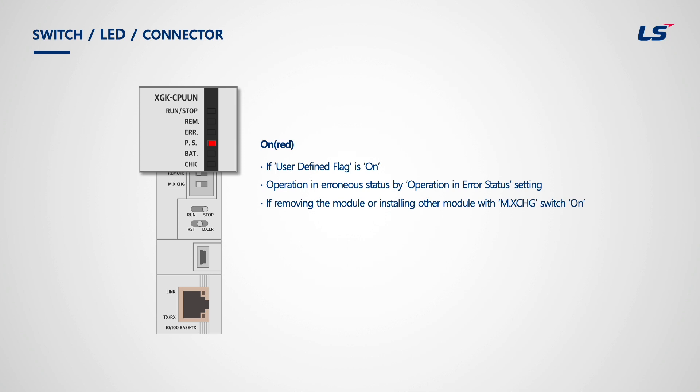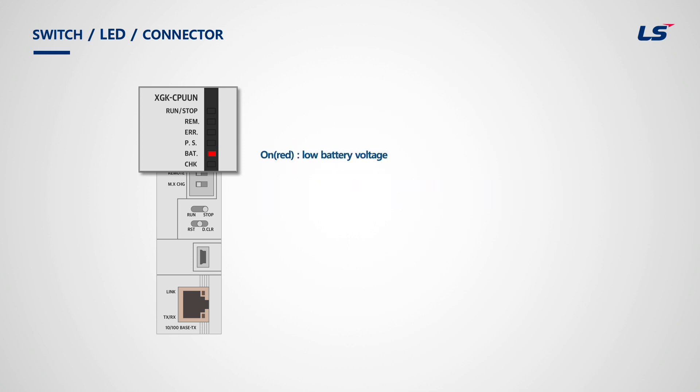It also turns on when removing or installing a module with the Module Exchange switch on. Next is the Battery LED. It turns red in the case of low battery voltage. The user needs to change the battery in advance, because if the PLC is left with power off for a certain period of time, the program will be deleted.